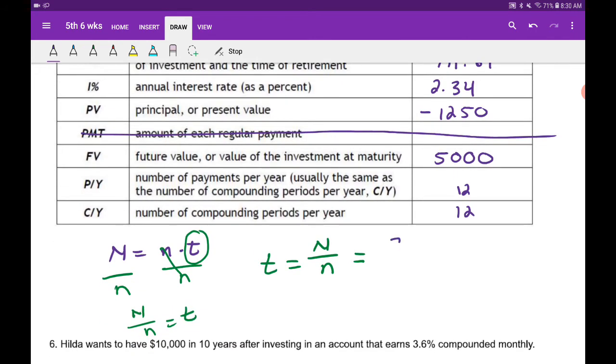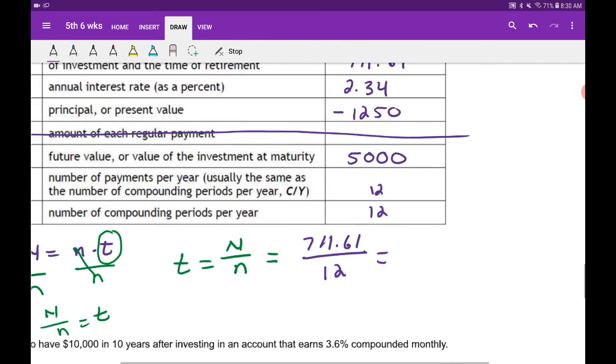This here is going to be 711.61 periods. We're going to use this 711.61 divided by little n, which we know is 12. Put that calculation into our calculator. So this is 59.3.